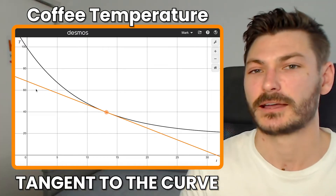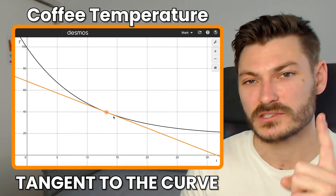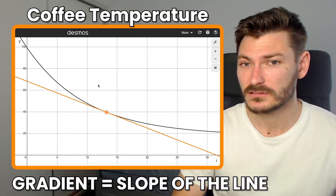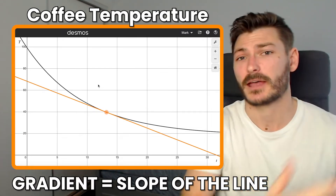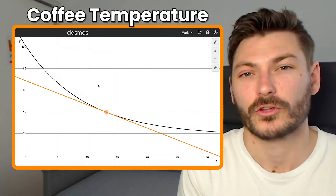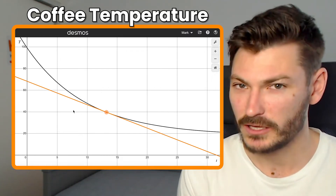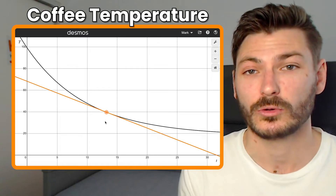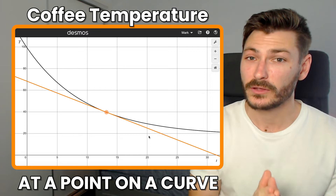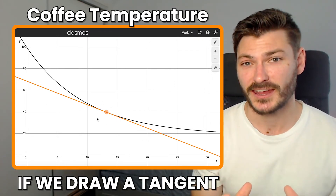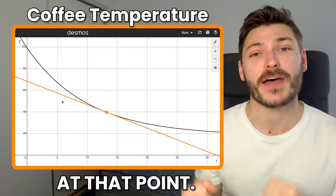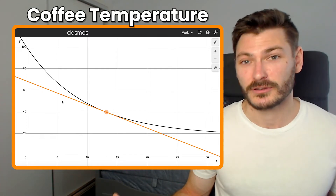Now if this tangent is going downhill it's going to have a negative gradient, and if it's going uphill it's going to have a positive gradient. At a point on a curve, the value of the gradient of the tangent is what we call the derivative at that point. Let me say that again: at a point on a curve, if we draw a tangent and then calculate its gradient, that number value is the derivative at that point. It is just the slope of a line.